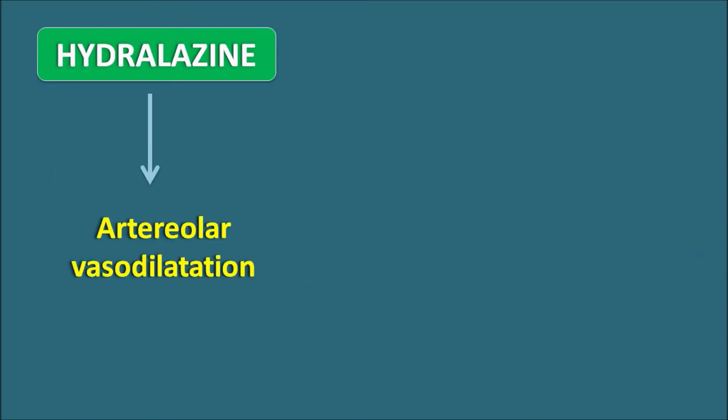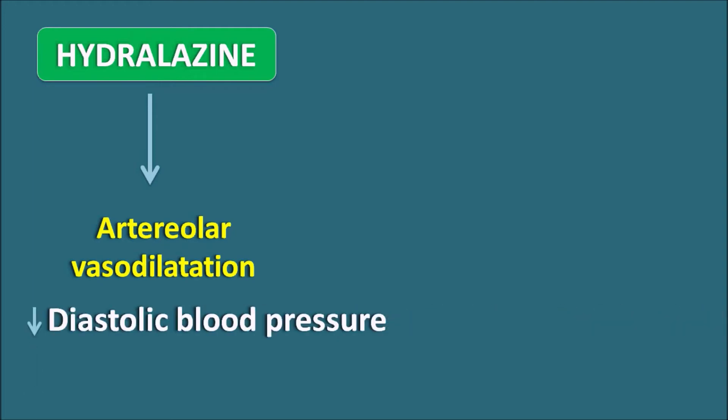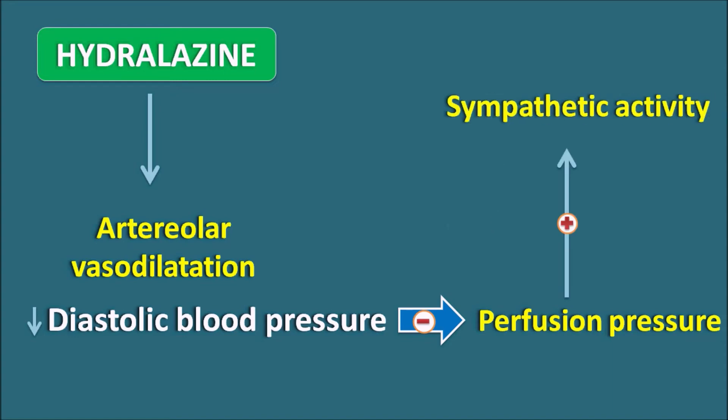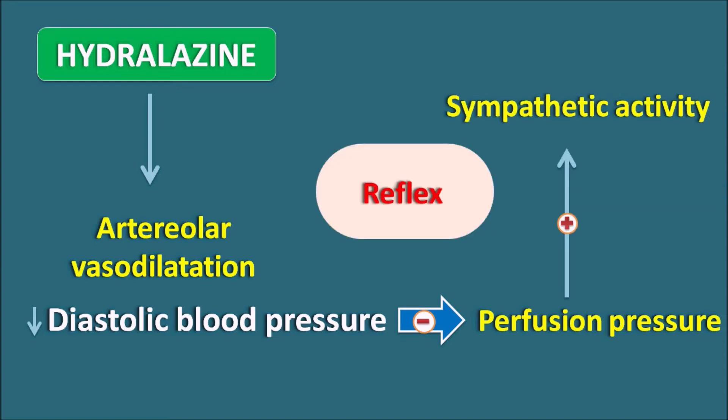Hydralazine acts as a vasodilator by decreasing the release of calcium from the sarcoplasmic reticulum. This drug is more selective for the arteries, so it mainly produces arteriolar vasodilatation. That's why this drug mainly reduces diastolic blood pressure, while systolic blood pressure is somewhat less affected. Since it decreases diastolic blood pressure, it may reduce perfusion pressure, and as perfusion pressure is reduced, it can activate the sympathetic system by a reflex mechanism.